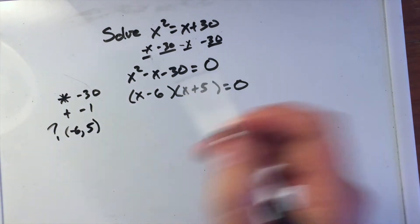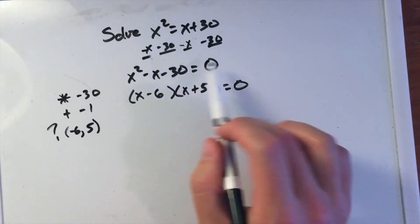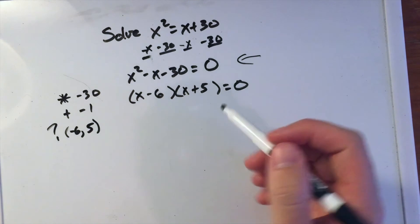At the end of this video, we'll foil it back out and see how we can get to this part here. That's a way to double check your work when you're factoring.